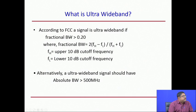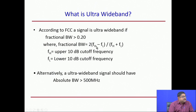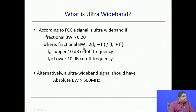Fractional bandwidth is a new concept here because for ultra wideband signals there is no question of a center frequency. There is a low frequency of operation f_L and a high frequency of operation f_H, defined as the frequencies at 10 dB below the maximum of the signal. The fractional bandwidth is (f_H − f_L) / ((f_H + f_L) / 2). Additionally, an ultra wideband signal should have an absolute bandwidth greater than 500 MHz.